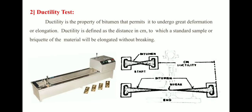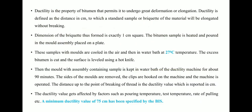The second test is the ductility test. This is the ductility apparatus. Ductility is the property of bitumen that permits it to undergo great deformation or elongation. Ductility is defined as the distance in centimeters to which a standard sample or briquette of the material will be elongated without breaking. The fineness of the filament that can be formed gives the ductility value.